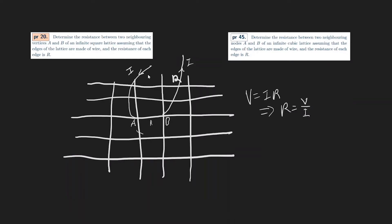So let's just consider this first current being driven in. By symmetry from A, there's going to be a current I/4 going in each of the four directions. So if you just drive this in, then from A to B the voltage created just by this input current — thinking about this current alone — there's a voltage drop of R·I/4.